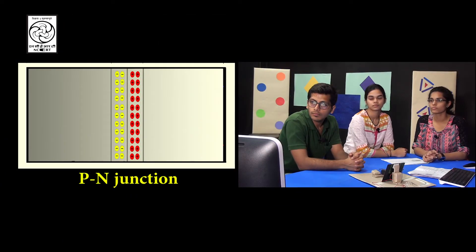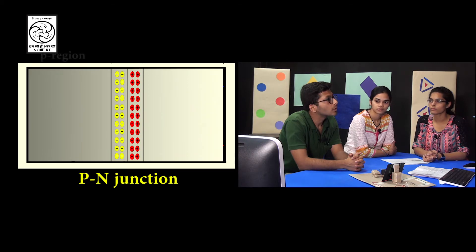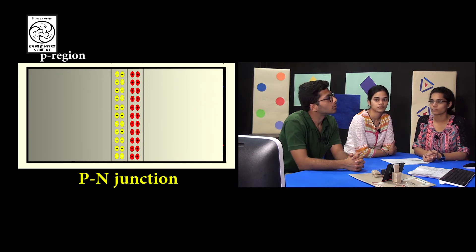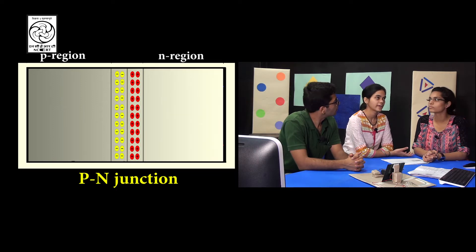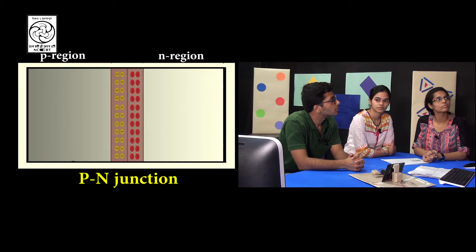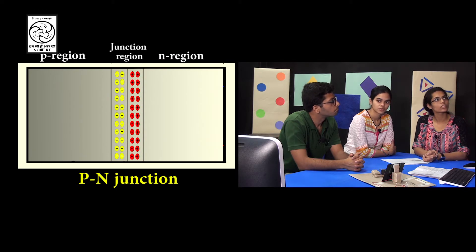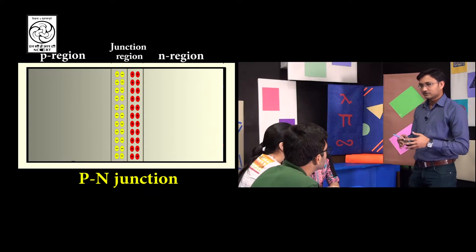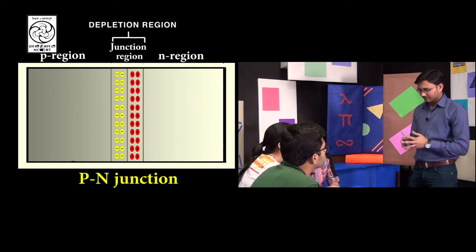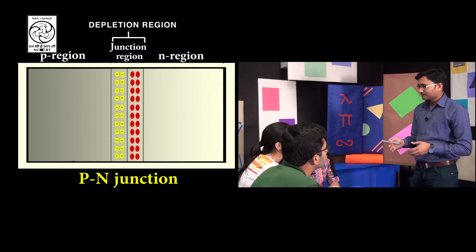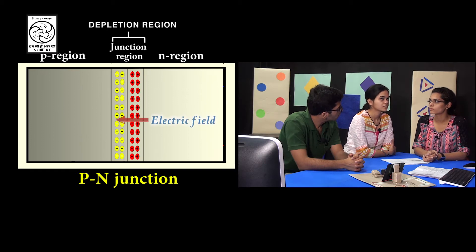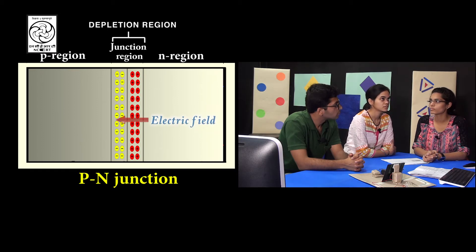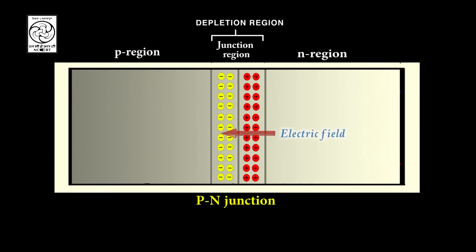Now our P-N junction will look like this, in which the left side of the P-N junction is called the P-region, and the right side is called the N-region. And the middle region where immobile ions are present is called the junction region. This junction region is also called the depletion region. Can you tell me the direction of the electric field in the junction region? Sir, it should be from positive ions to negative ions, that is from N to P-region. Good. This electric field in the depletion region plays an important role in the working of solar cell.